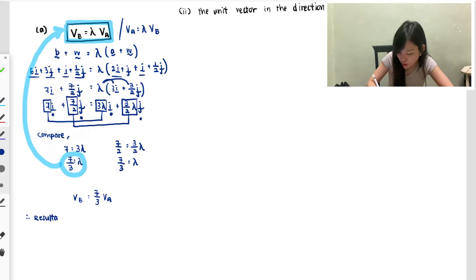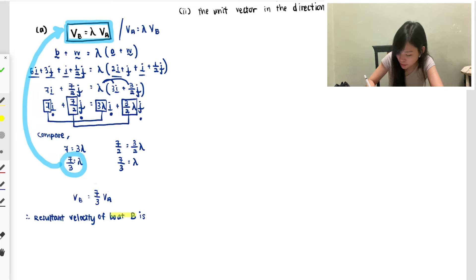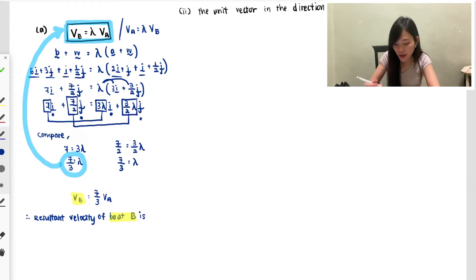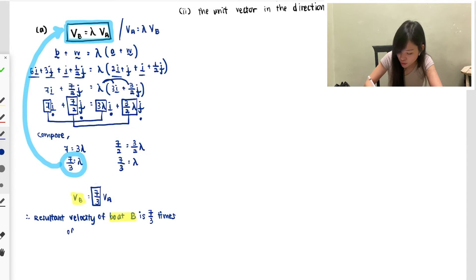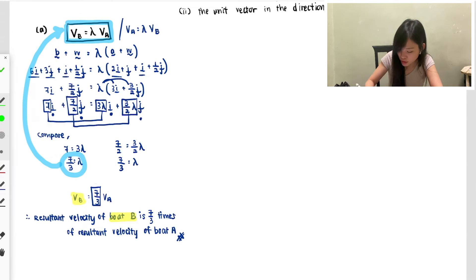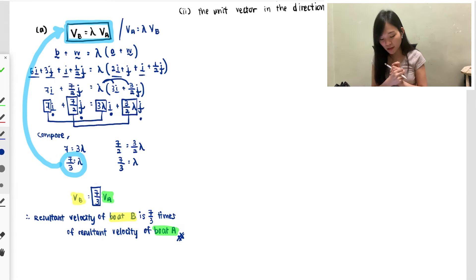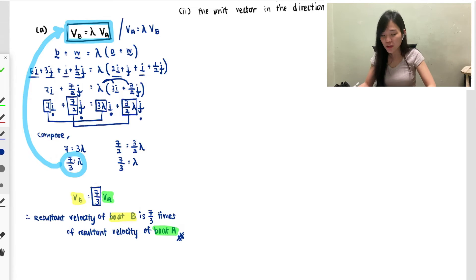So the final answer: the resultant velocity of boat B is 7/3 times the resultant velocity of boat A. Easy! Many students couldn't do this because they didn't understand what resultant velocity means. That also tells us boat B will be faster than boat A.